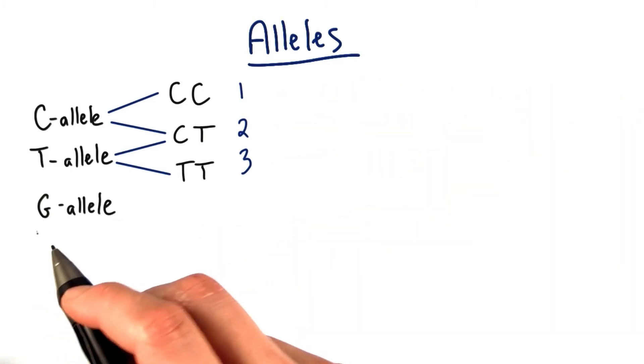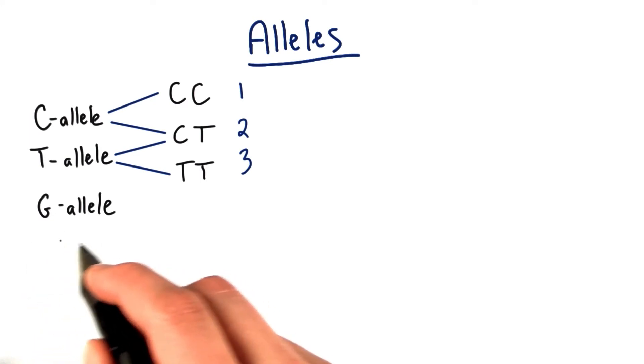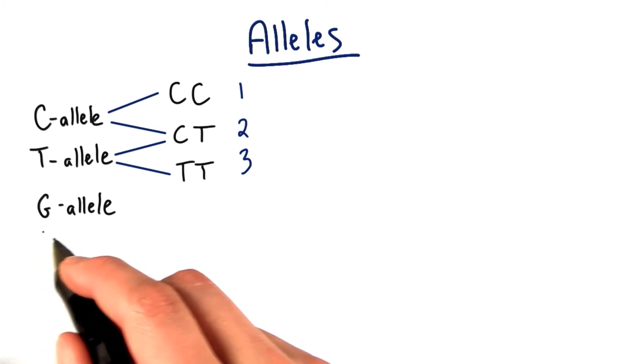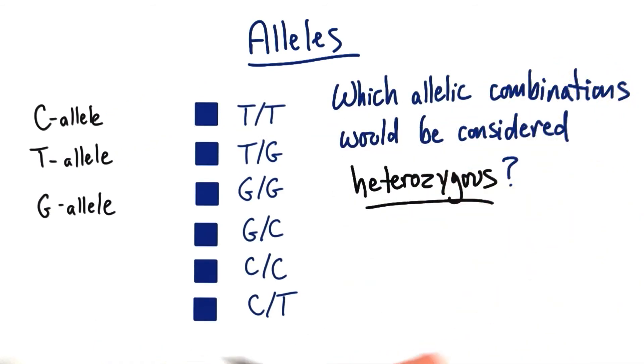But let's imagine for a second, just completely hypothetically, that there was a third allele at the same genetic position, where there's now a guanine or a G instead of a cytosine or a thymine. Of all the possible allelic combinations that we could get out of these three alleles, I want you to tell me which allelic combinations would be considered heterozygous. Go ahead and check any and all boxes that you think apply.